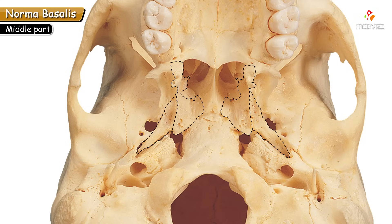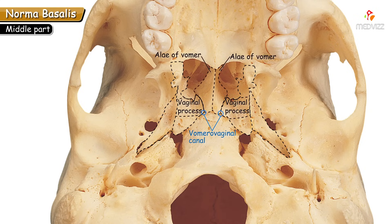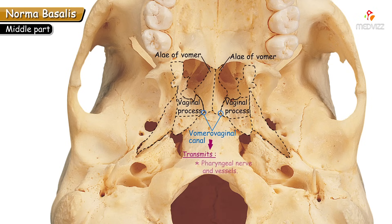The vomero-vaginal canal lies slightly posterior to the pharyngeal canal. As the name suggests, it is between the vomer and the vaginal process of the medial pterygoid plate. The alae of the vomer articulate with the vaginal process of the medial pterygoid plate, and at the site of articulation the gap is termed the vomero-vaginal canal, which transmits the pharyngeal nerve and vessels.